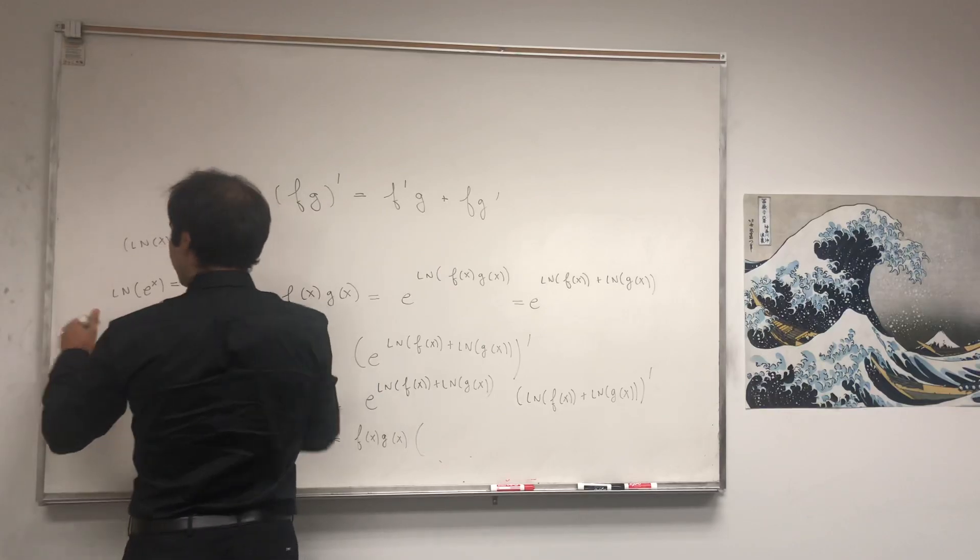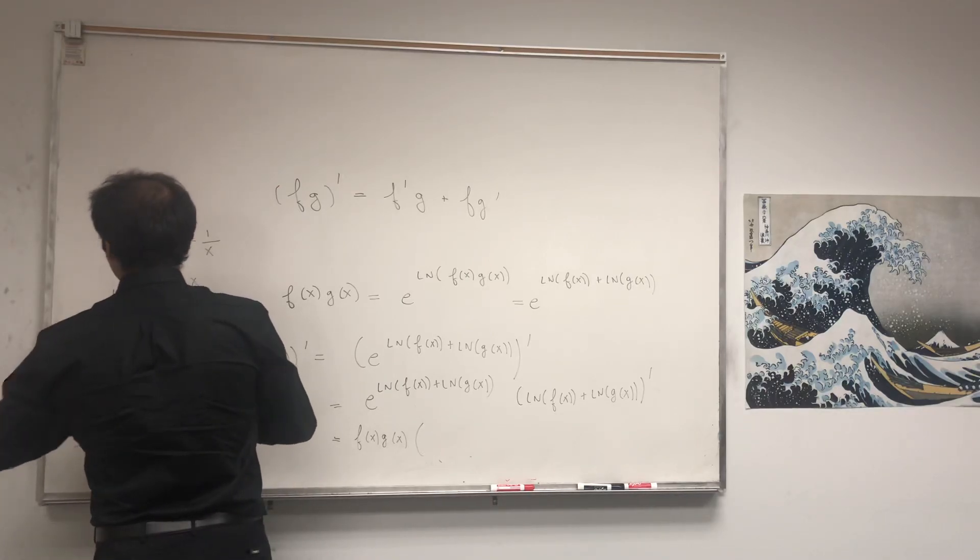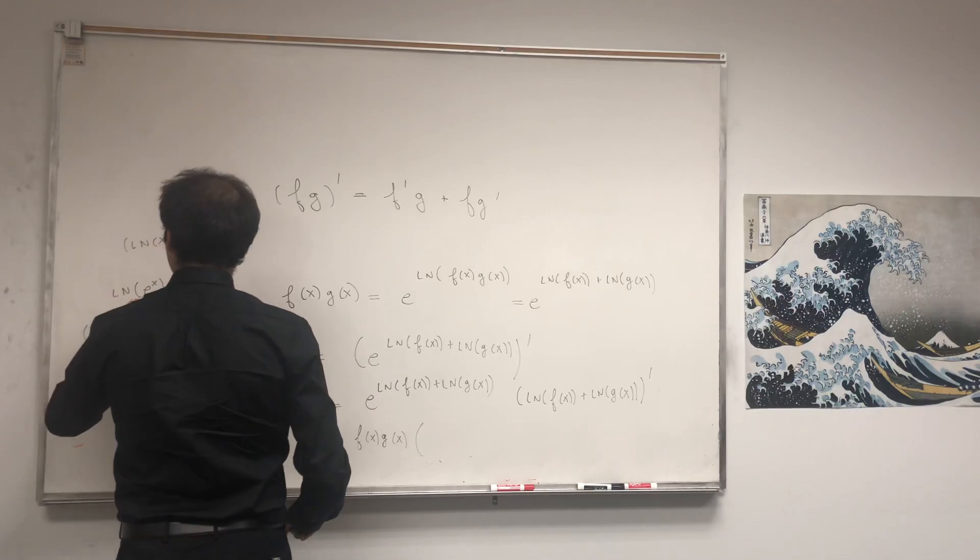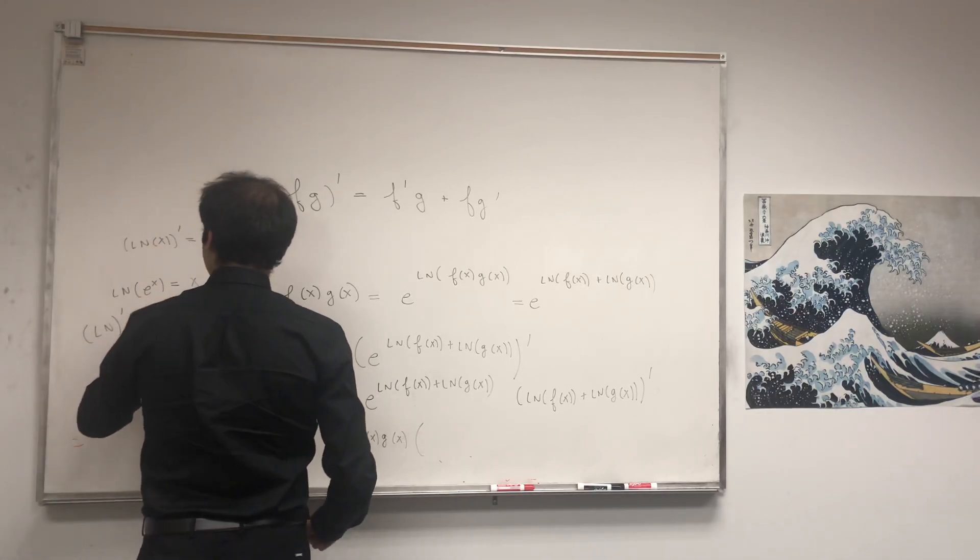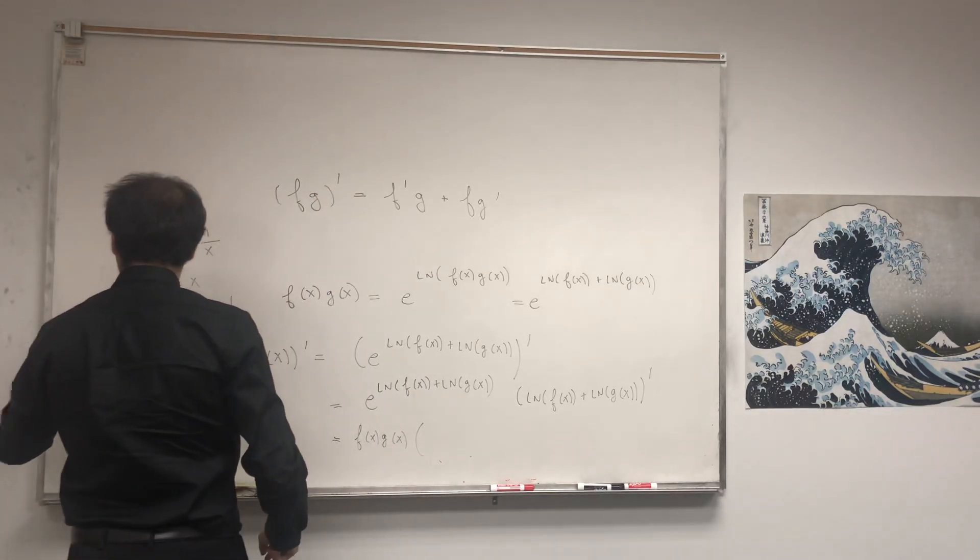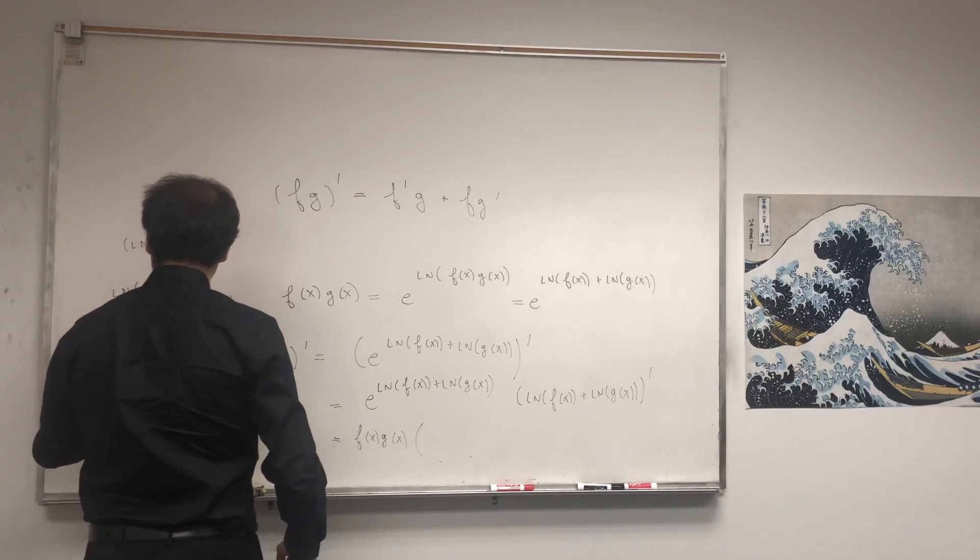Differentiating both sides using the chain rule, you get ln' at e to the x times e to the x equals 1. So ln' at e to the x is 1 over e to the x.